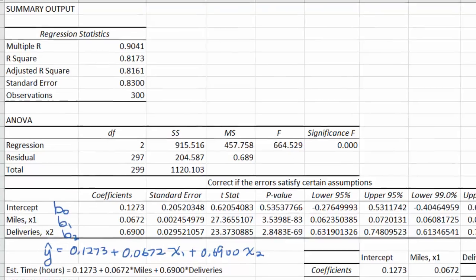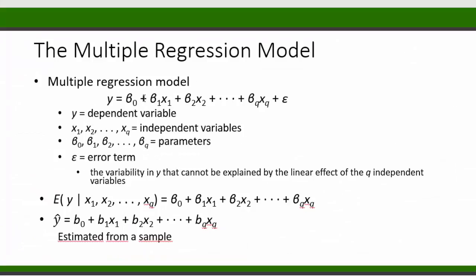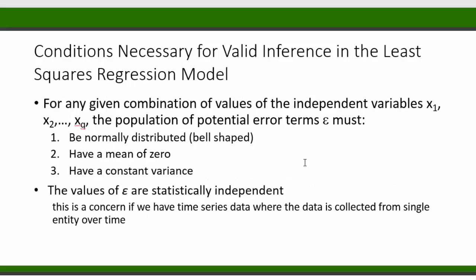So what are these assumptions? Recall the regression model for the population. This model assumes that the error term has certain properties. For any fixed combination of the independent variables, the x variables, the error terms must be normally distributed, have a mean of 0, and have a constant variance. In addition, the error terms must be statistically independent from one another. This last part is a concern only if your data are in the form of a time series, like weekly data, monthly data, and so forth.